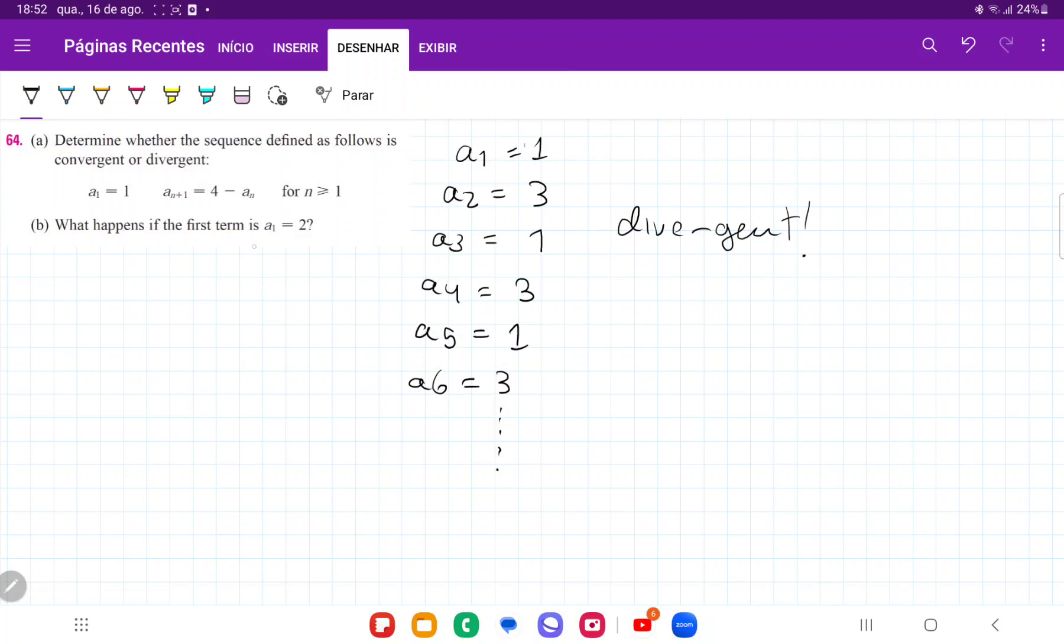Now let's try it if the first term a1 is equal to 2. So we have a1 equals 2, and a2, same logic, is equal to 4 minus the previous term. So 4 minus 2 is equal to 2.